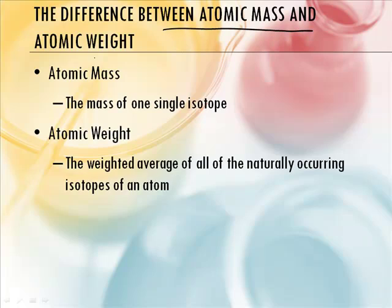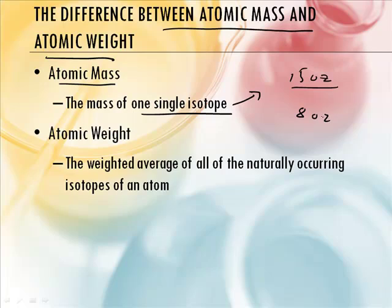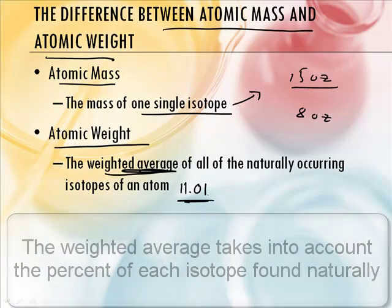The difference between atomic mass and atomic weight. Atomic mass is the mass of one single isotope. So if we go back to our analogy, it weighs 15 ounces. That one, the larger can of tomato sauce. Or it could weigh eight. Okay. But the average or the atomic weight is the weighted average. That was the 11 point.